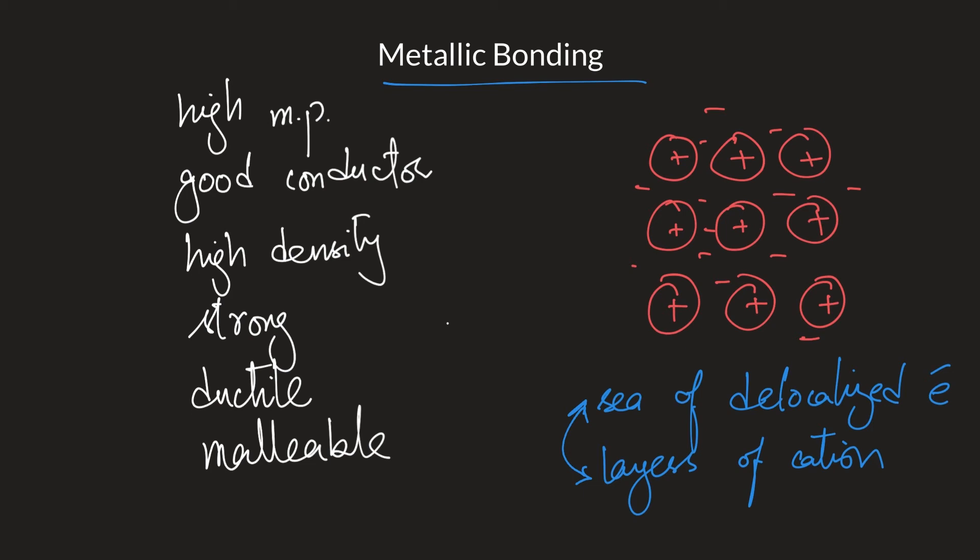So you have lots of positive ions, lots of free electrons, which are negative. So they've constantly attract each other. And that strong attraction is called metallic bonding. Now the answer to why metals have these properties lies in this diagram. You can see that the strong forces are there. What that means is that because of these strong forces, you will need to supply a large amount of energy to break them.